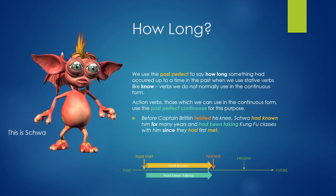How long? We use the past perfect to say how long something had occurred up to a time in the past, when we use stative verbs like know — verbs we don't usually use in the continuous form. Action verbs, those which we can use in the continuous form, use the past perfect continuous for this purpose. Before Captain Britlish twisted his knee, Schwa had known him for many years, and had been taking kung fu classes with him since they had first met.